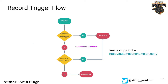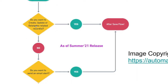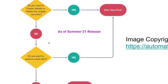Whenever you have a requirement and you want to create a flow, you need to determine whether to use a before trigger flow or an after trigger flow. For example, once it is time to create a flow and you have a requirement, ask yourself: do you want to create, update, or delete related records — not the same record? If yes, use an after-save flow.